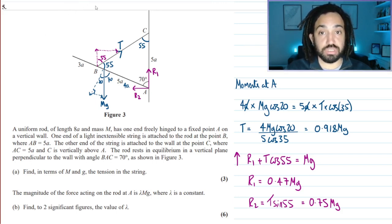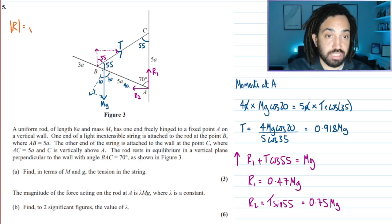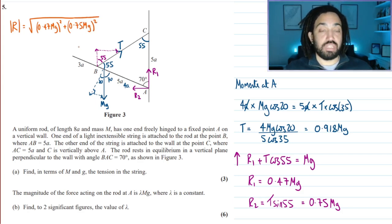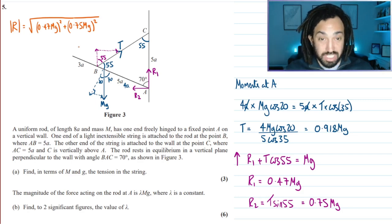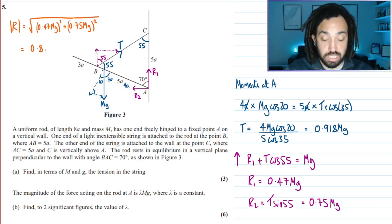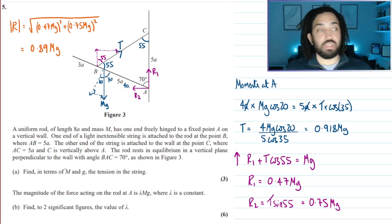Now we need to find the magnitude of that reactional force by combining the two components. I can write the magnitude of R equals the square root of 0.47mg squared plus 0.75mg squared. The mg's are going to be squared, then we're going to add them together and then square root. We just need to focus on the coefficients of mg here. If I just ignore the mg's and just square the coefficients and then add them together and then square root, that's going to give me a value of 0.89mg.